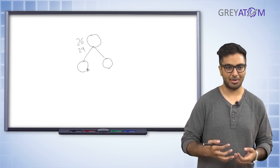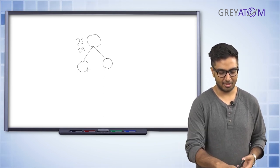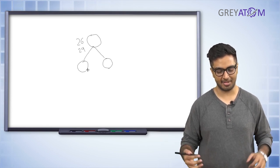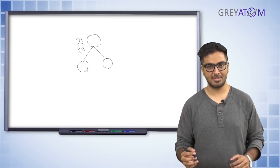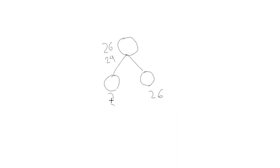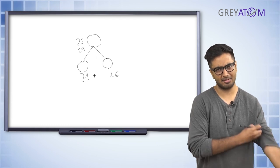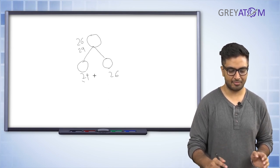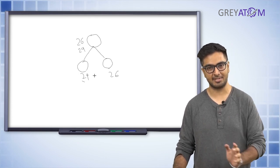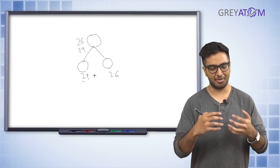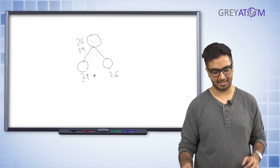Your idea is to split the population such that the two child nodes are as different from each other as possible, but very similar within themselves. Ideally, if there's one single criterion — like age — that can completely separate people who got a loan from those who didn't, that would be the best possible split.